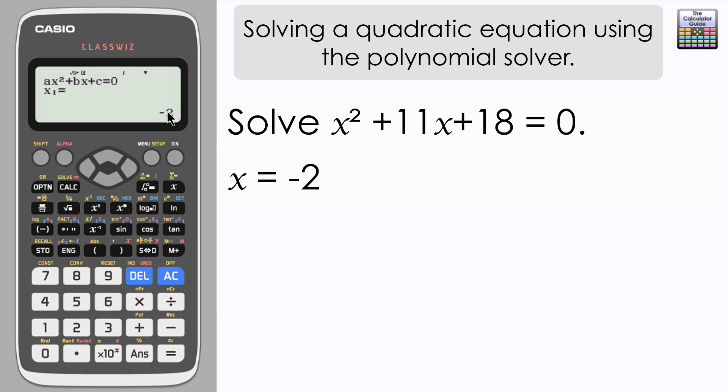And here we have our first solution, x equals minus 2. If I press equals again, then I get the second solution, which is x equals minus 9. So there's the two solutions, the quadratic equation is solved.